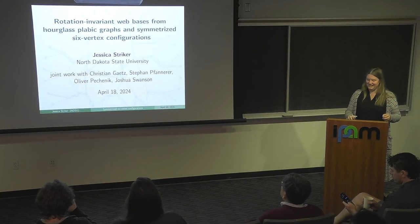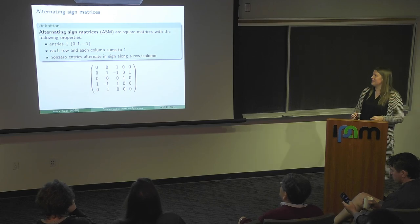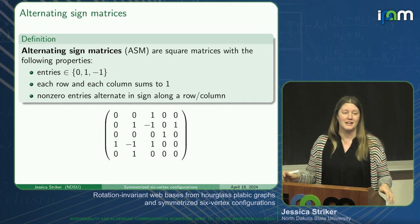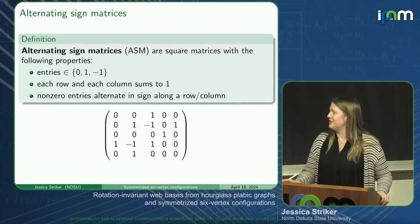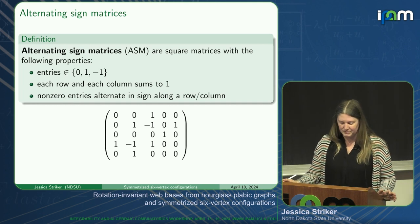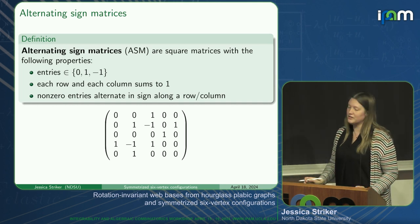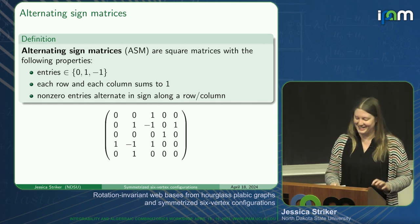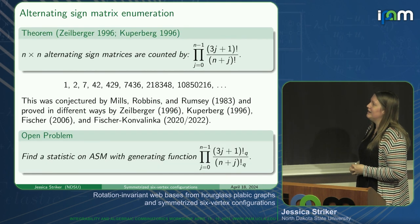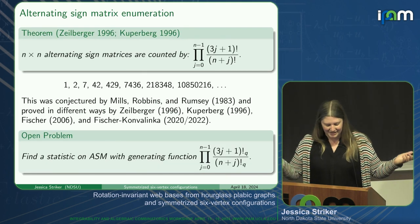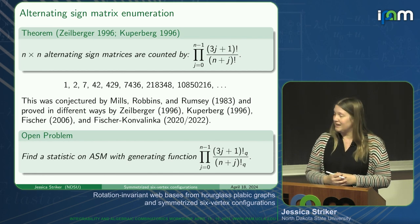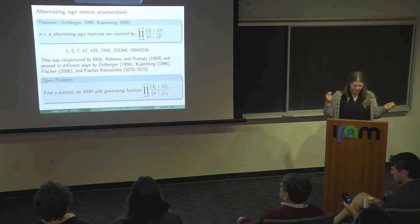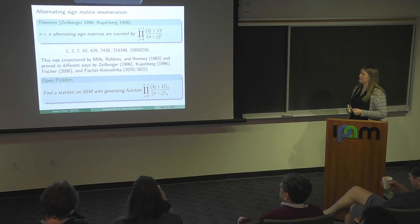I will talk about all the things in the title, but I want to start with a slide that has appeared in most of the talks I've ever given about some of my favorite combinatorial objects, which we have thankfully seen already in this workshop. We like alternating sign matrices because you can count them, and the proofs of this counting formula were all very different and very insightful, and one of them leads us to the six-vertex model.